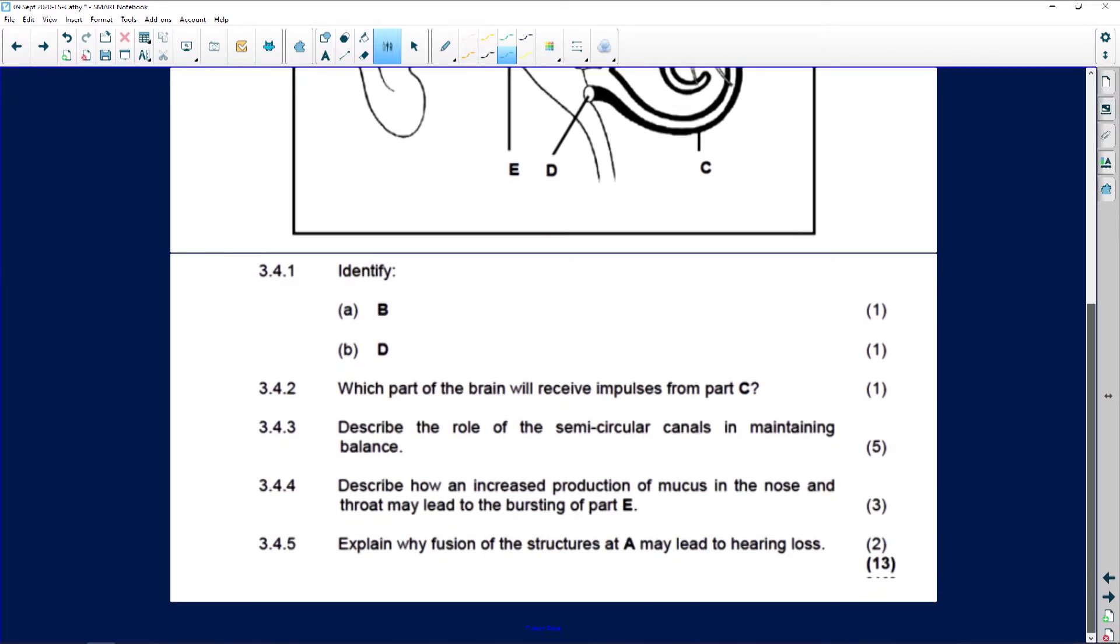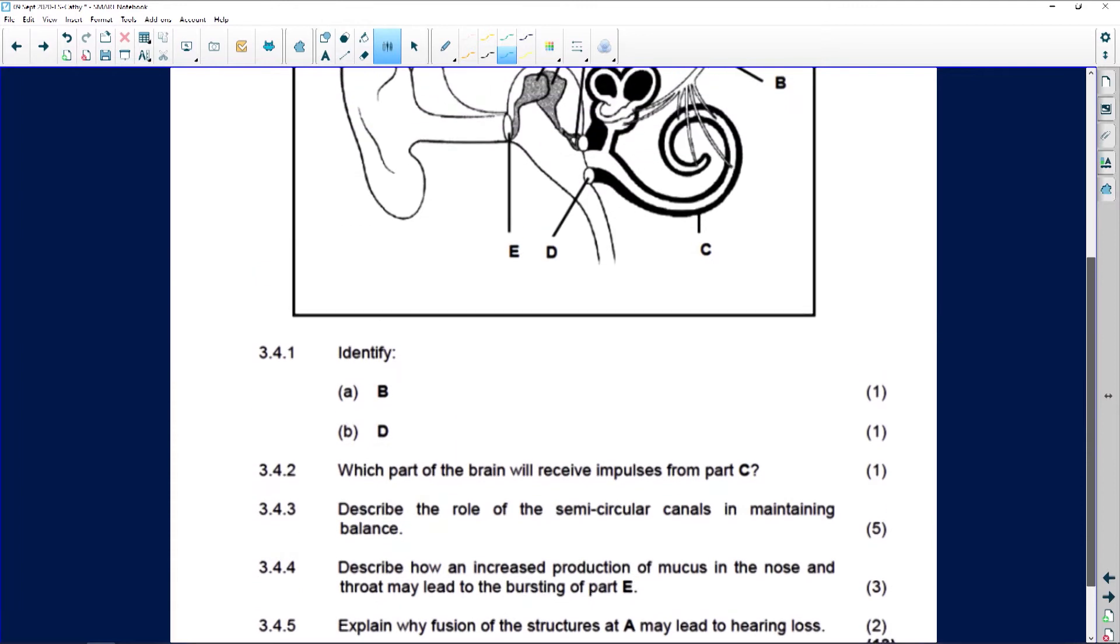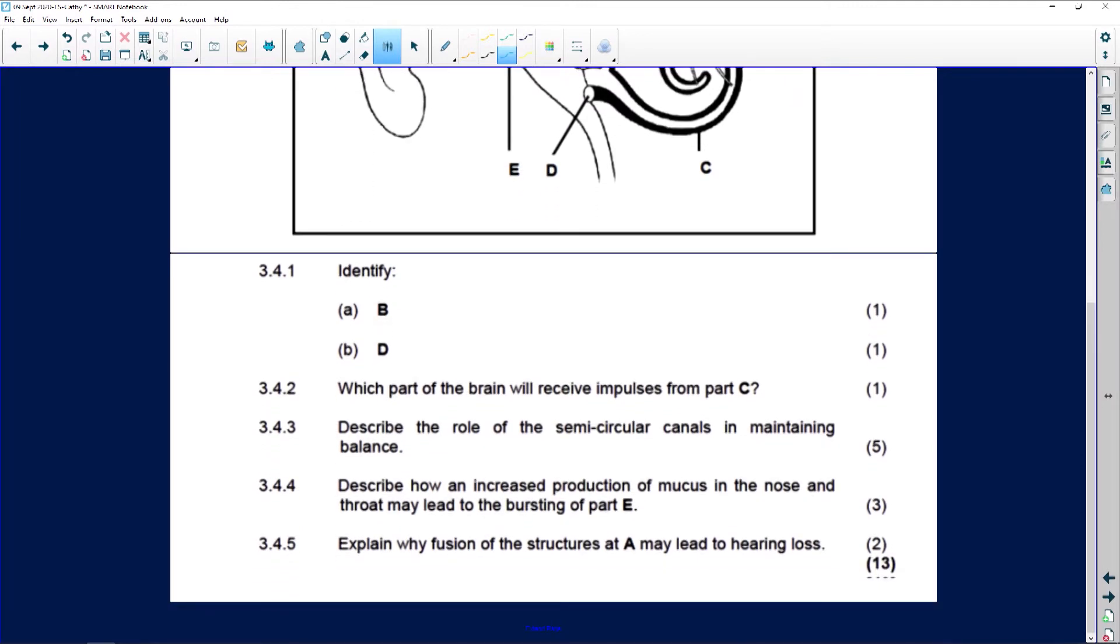Which part of the brain receives impulses from C? C is the cochlea. It's going to be the cerebrum, because remember the cerebellum is for balance.